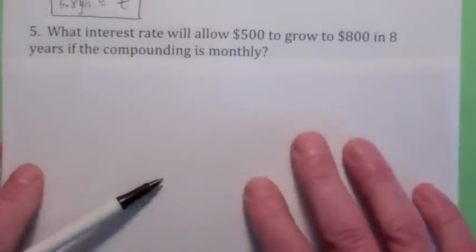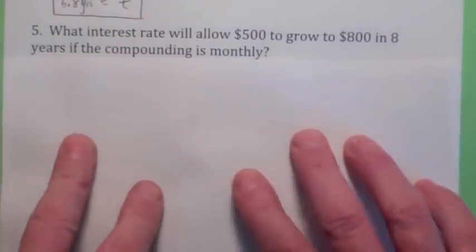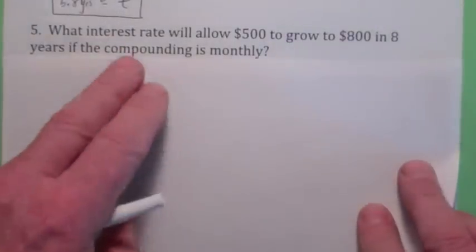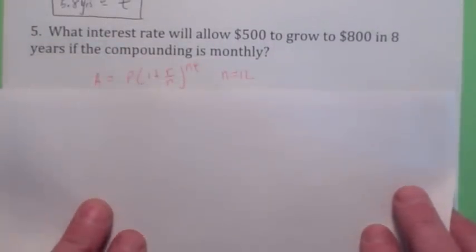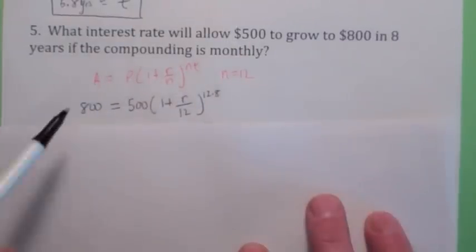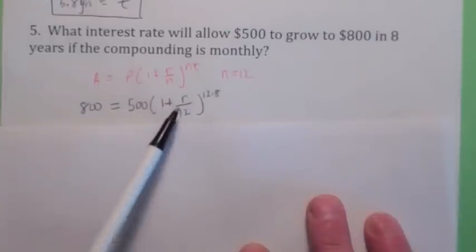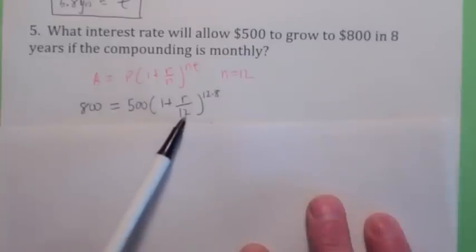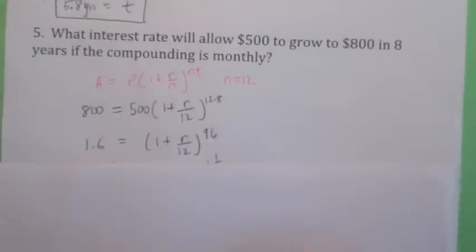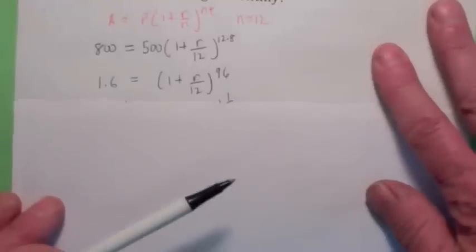This one's kind of sneaky actually. This one says, what interest rate will allow $500 to grow to $800 in 8 years if the compounding is monthly? They're asking us to find R now, aren't they? We have the compound interest formula, n equals 12. They're asking us to find R. When you plug everything in, you know the final amount is 800, the initial amount is 500. They don't tell us R, but they tell us the compounding is monthly, so n equals 12. And then 8 is the year. So we have this equation.